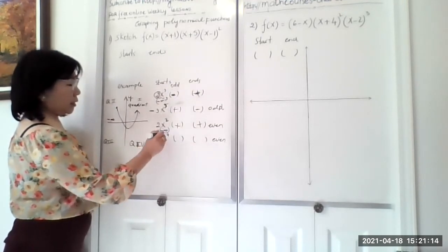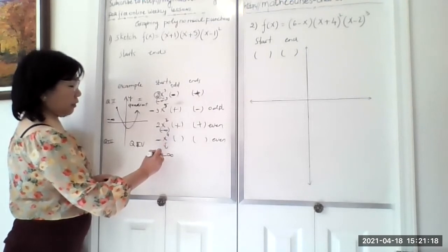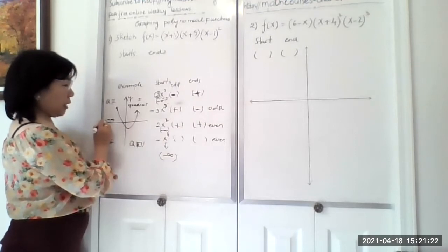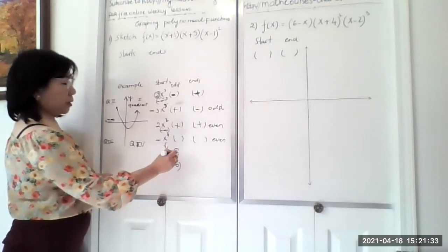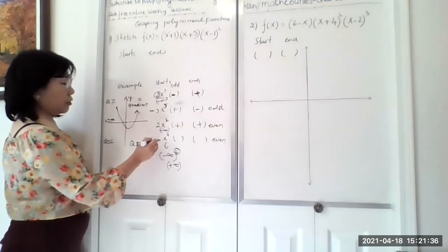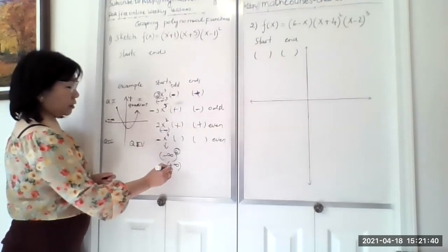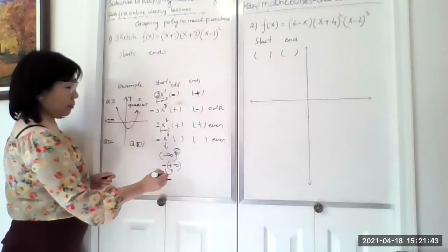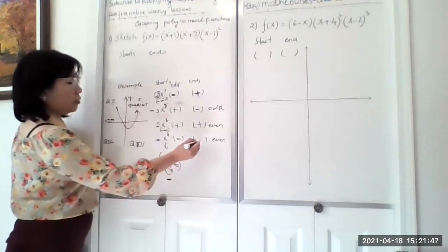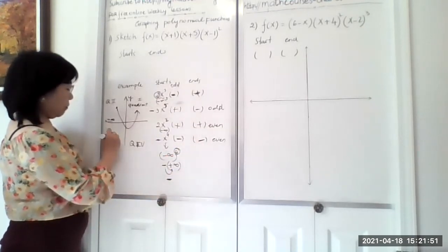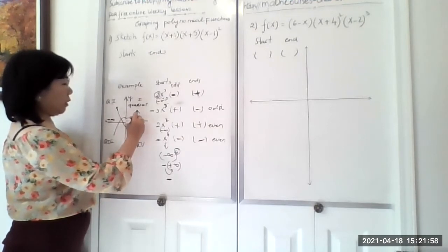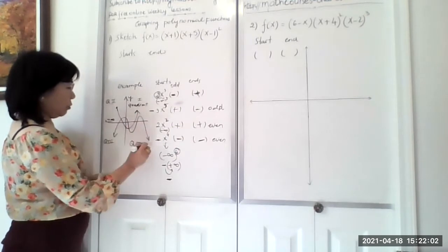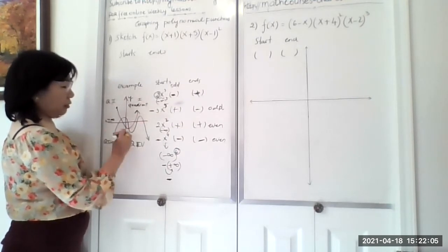Now let's talk about -x⁴. If you substitute x as negative infinity and raise it to the power of 4, it becomes positive because of the even power. However, we have a negative in front, which changes this positive to negative. So our function starts down here — the start will be negative and the end will be negative as well. We start from quadrant 3, go up and back down, and end downward because both ends have to be in the same direction for an even power.